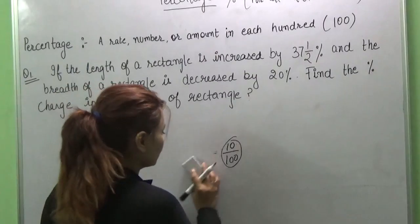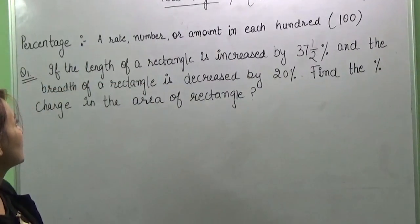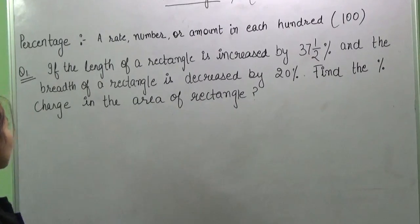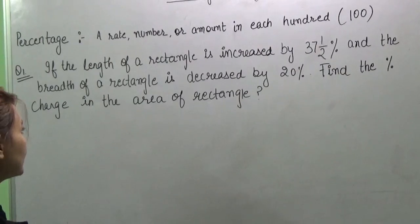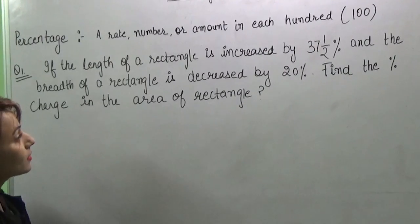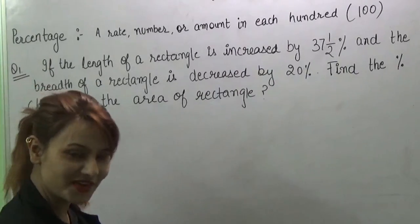So I think we should begin with the question. The length of a rectangle is increased by 37.5% and the breadth is decreased by 20%. Find the percentage change in the area of the rectangle.